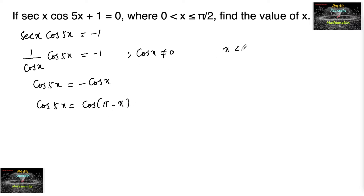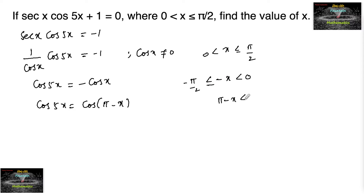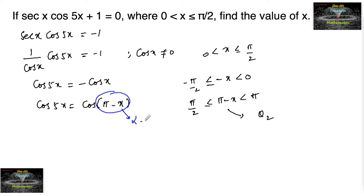Since x lies between 0 and π/2, so -x lies between -π/2 and 0, and π - x lies between π/2 and π. So π - x belongs to the second quadrant, which is within the principal range of cosine. Let us consider π - x to be α; this is the principal solution.